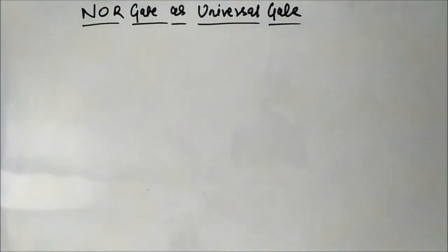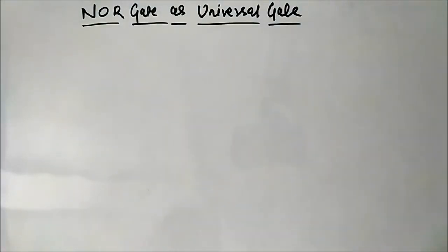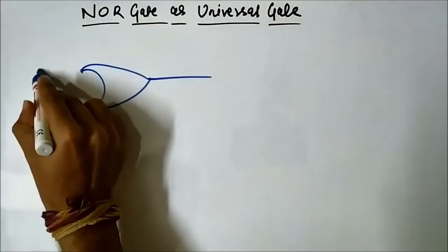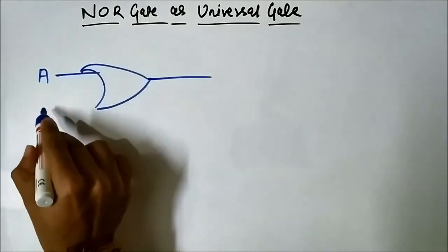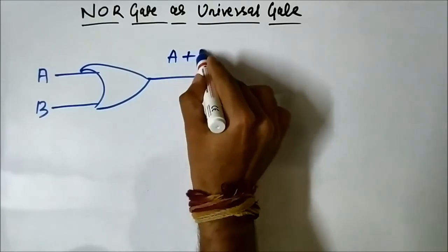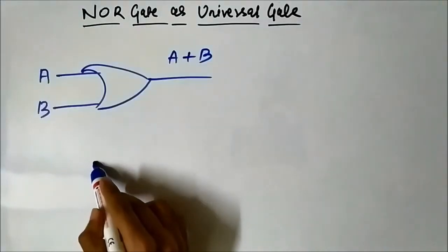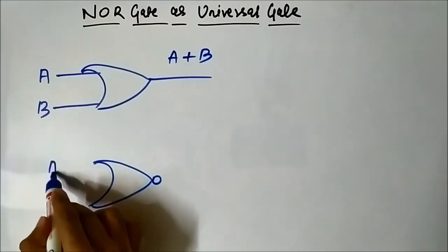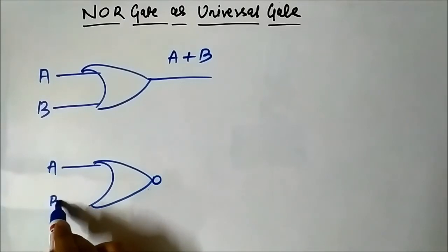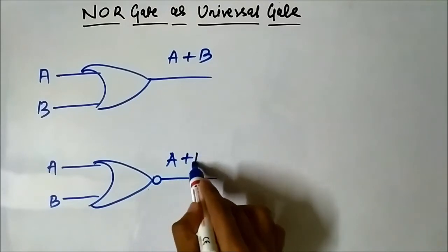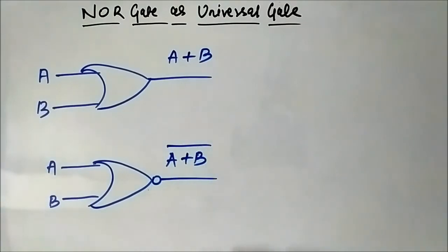Next, let us see how we can use the NOR gate as an OR gate. The basic OR gate has schematic symbol with two inputs A and B, and the output is A OR B. The NOR gate is simply the same OR symbol followed by a bubble, giving inputs A and B with output as A OR B complement.